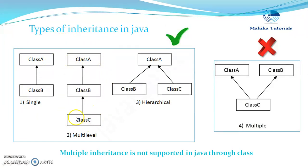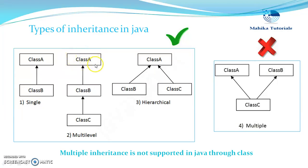The second type of inheritance supported by Java is multi-level inheritance. Multi-level inheritance is where one subclass is derived from another subclass. In this example, class C is derived from class B, which is the subclass of class A. So class C extends class B, and class B extends class A — class A is the super class for class B, and similarly class B is the super class for class C.